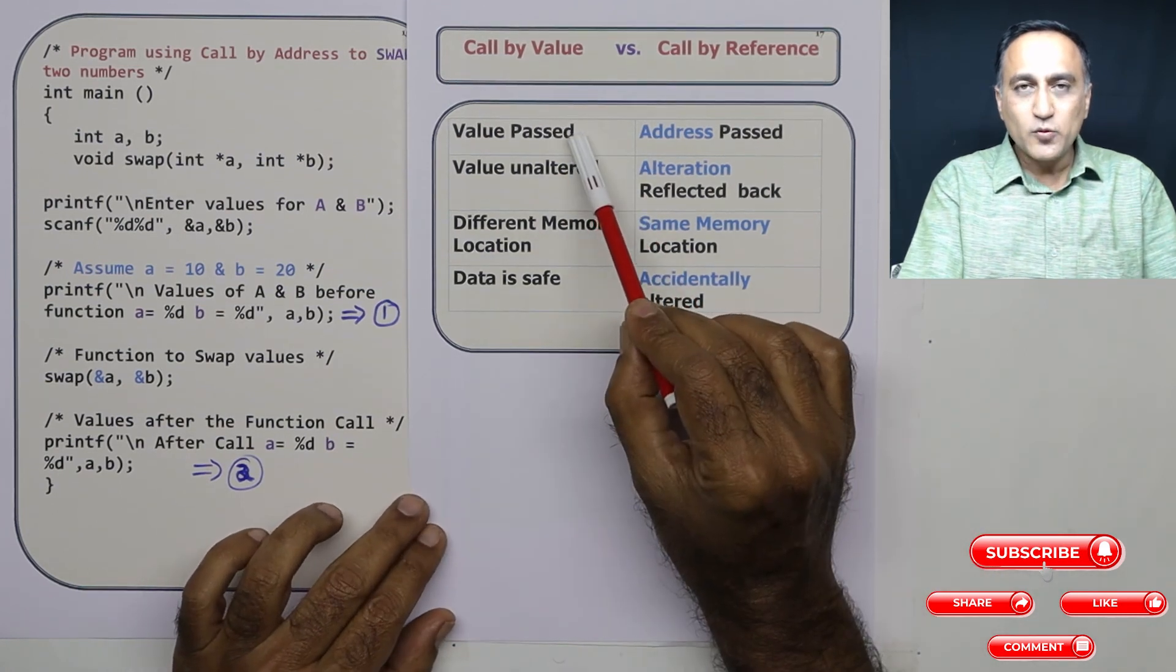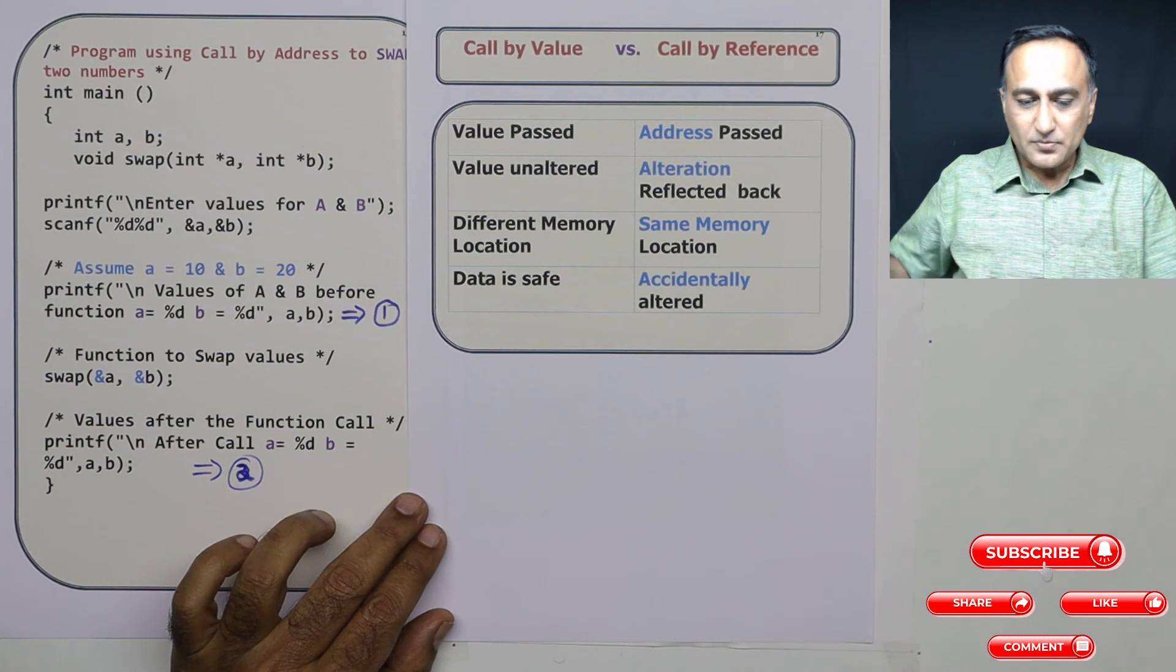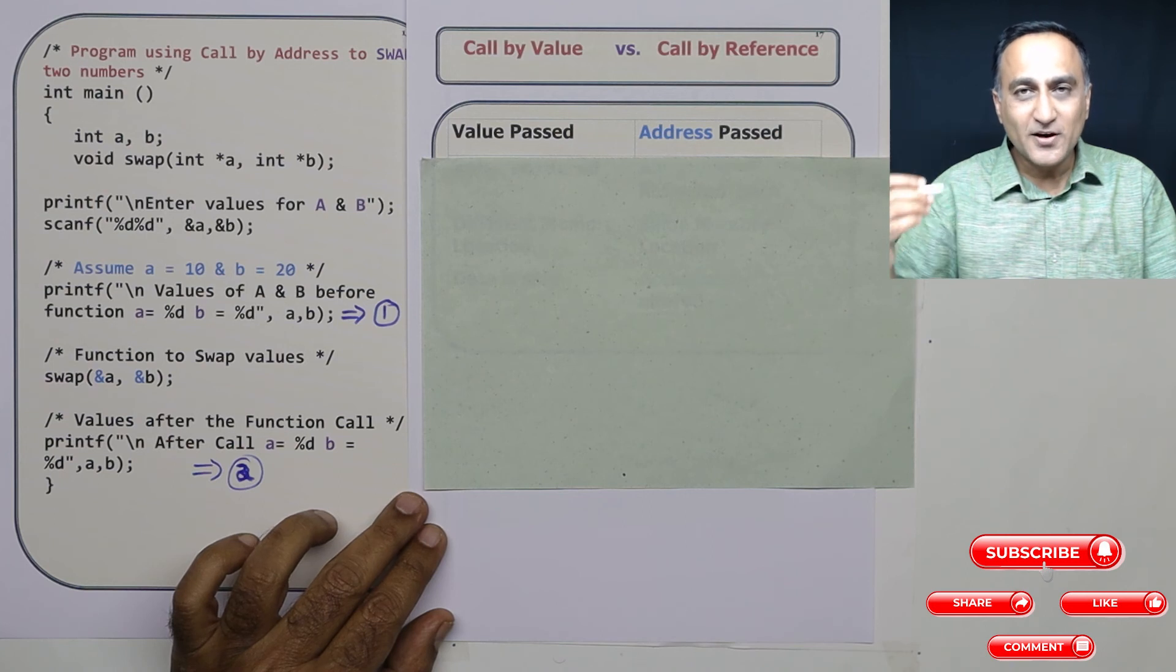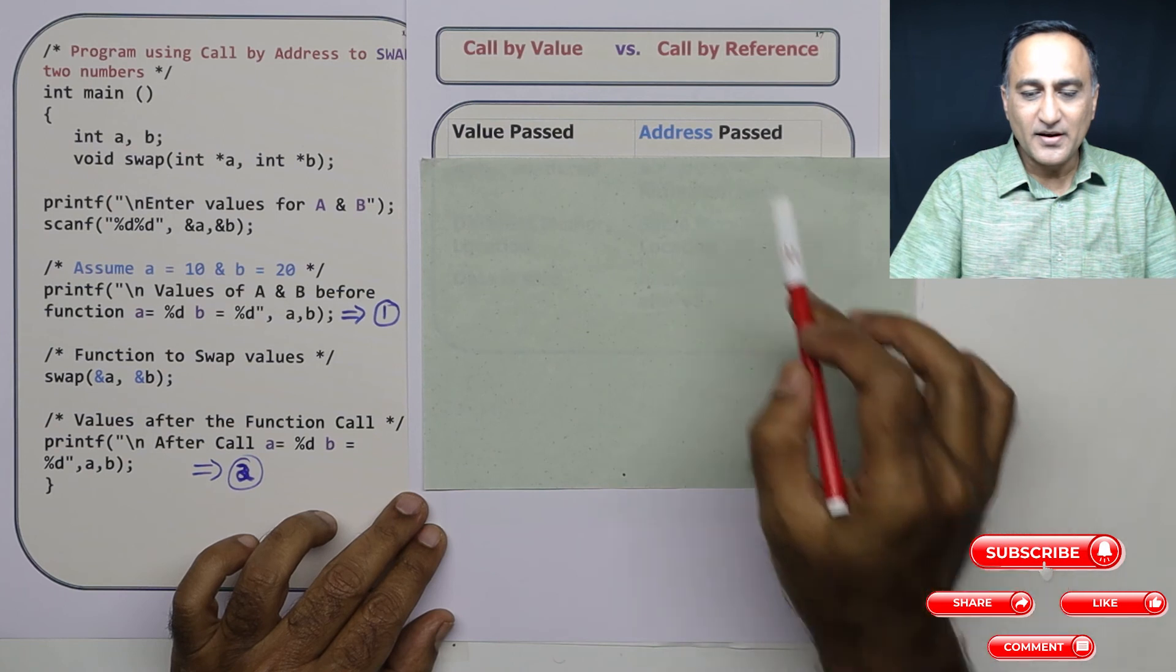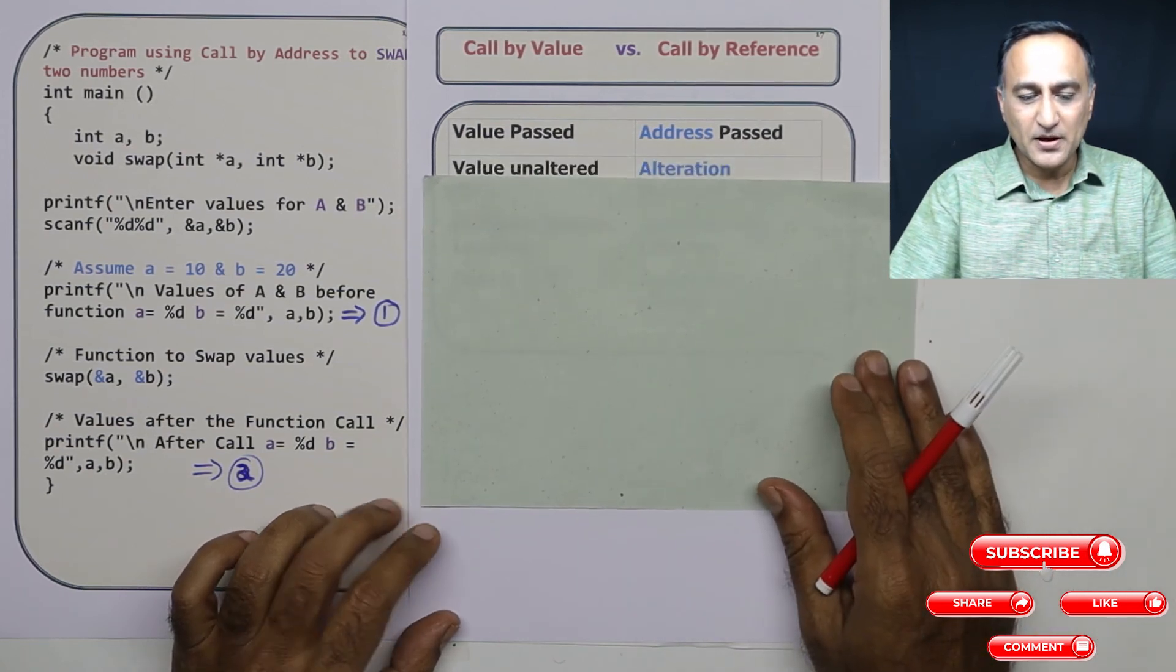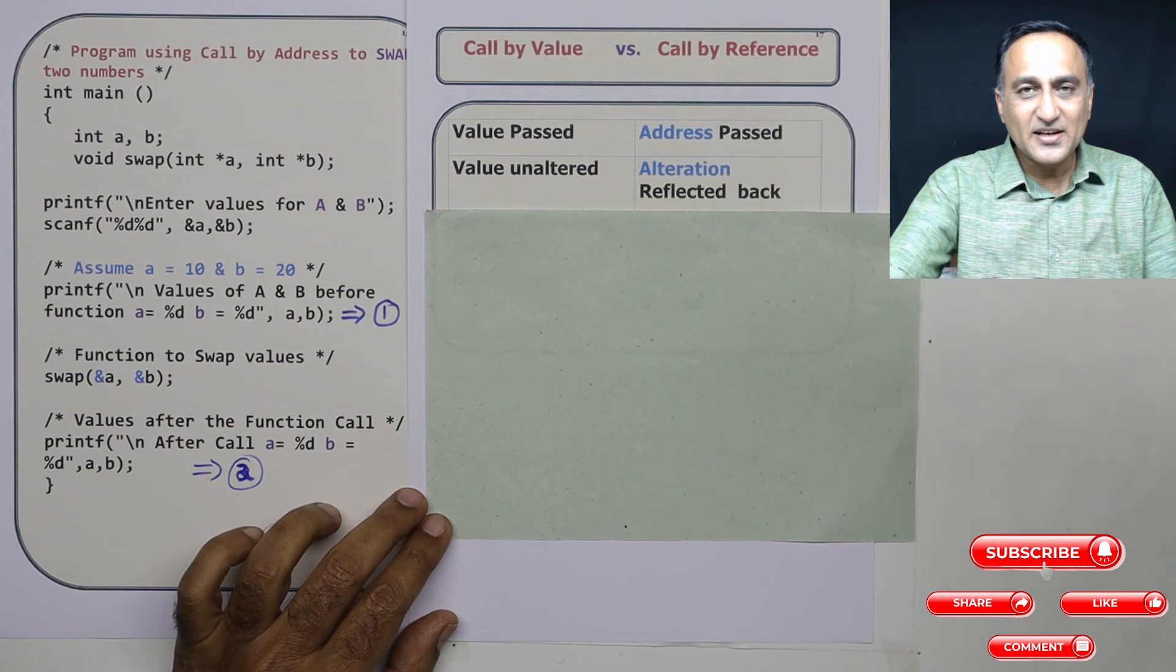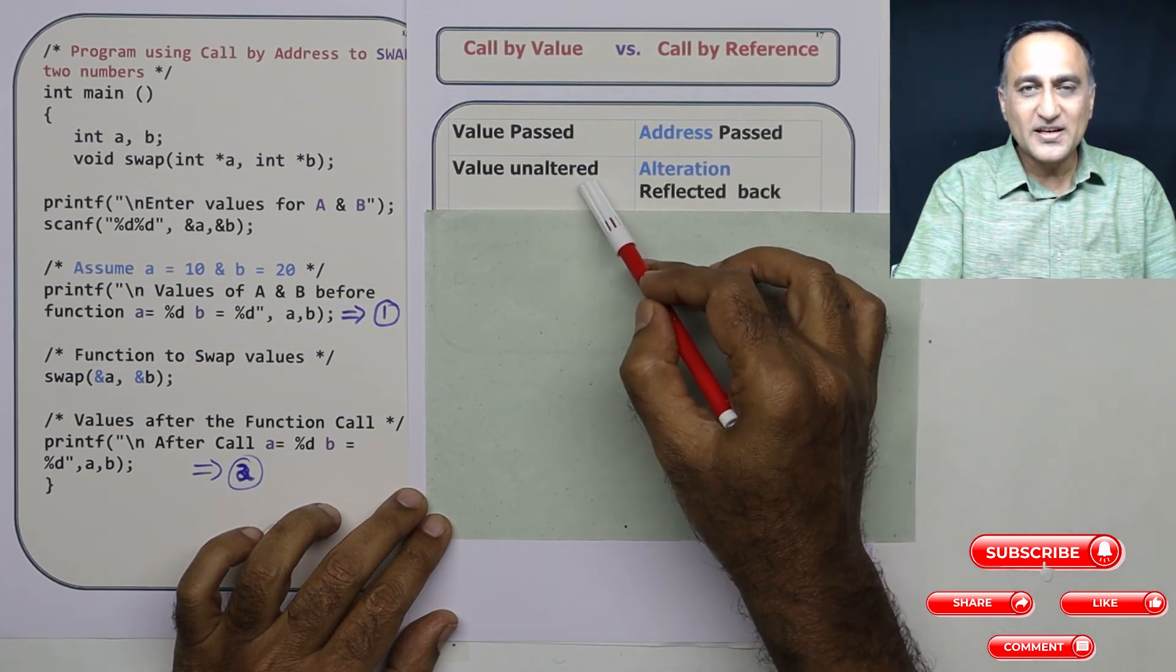In call by value, you're passing a value and the original value is retained in main. So you're playing around with the copy of the value in the function. So if you destroy the copy, the original value will not get affected. In call by reference, you are giving the key or the address to the memory. So because you're making a copy and sending that copy to the other function, anything happens to the copy, the original doesn't get damaged. Whereas here, there is a chance that the original will get affected if you are not careful.